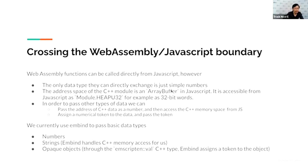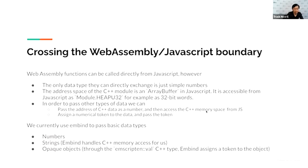Crossing the WebAssembly/JavaScript boundary: WebAssembly functions can actually be called directly from JavaScript. If you write a C function declared as extern, you can directly call them from JavaScript. However, the only types that can be directly exchanged are simple numbers — you can pass numbers but not other objects. In order to pass other objects, we take advantage of the address space. The entire C++ address space is an array buffer in JavaScript, accessible from both JavaScript and C++. C++ data has an address which we can use to access C++ memory directly from JavaScript, or we can create a numerical token to the data and pass the token — a bit slower, but performance is not our first priority.